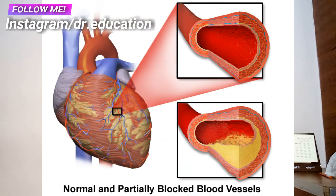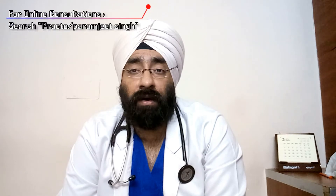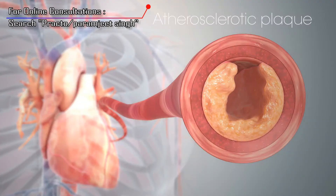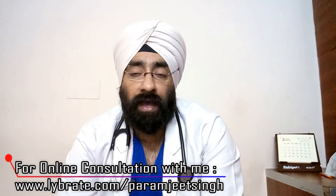Coronary artery disease happens when the arteries that supply blood to your heart muscles become hardened and narrowed. This happens due to a buildup of plaque, which is a mixture of fat, cholesterol, and other materials present in your blood, deposited on the inner walls of the blood vessels. This buildup is called atherosclerosis.